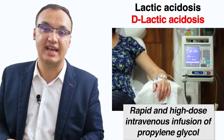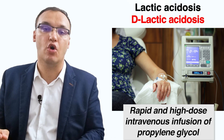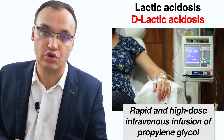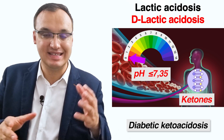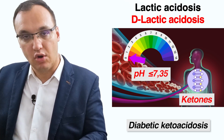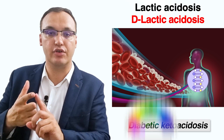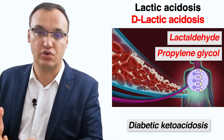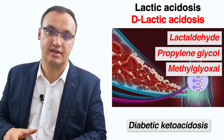Other causes of D-lactic acidosis include rapid, high-dose intravenous infusion of propylene glycol and diabetic ketoacidosis. In these settings, D-lactic acid is a metabolic product of other accumulating metabolites — lactaldehydes with propylene glycol and methylglyoxal in diabetic ketoacidosis.